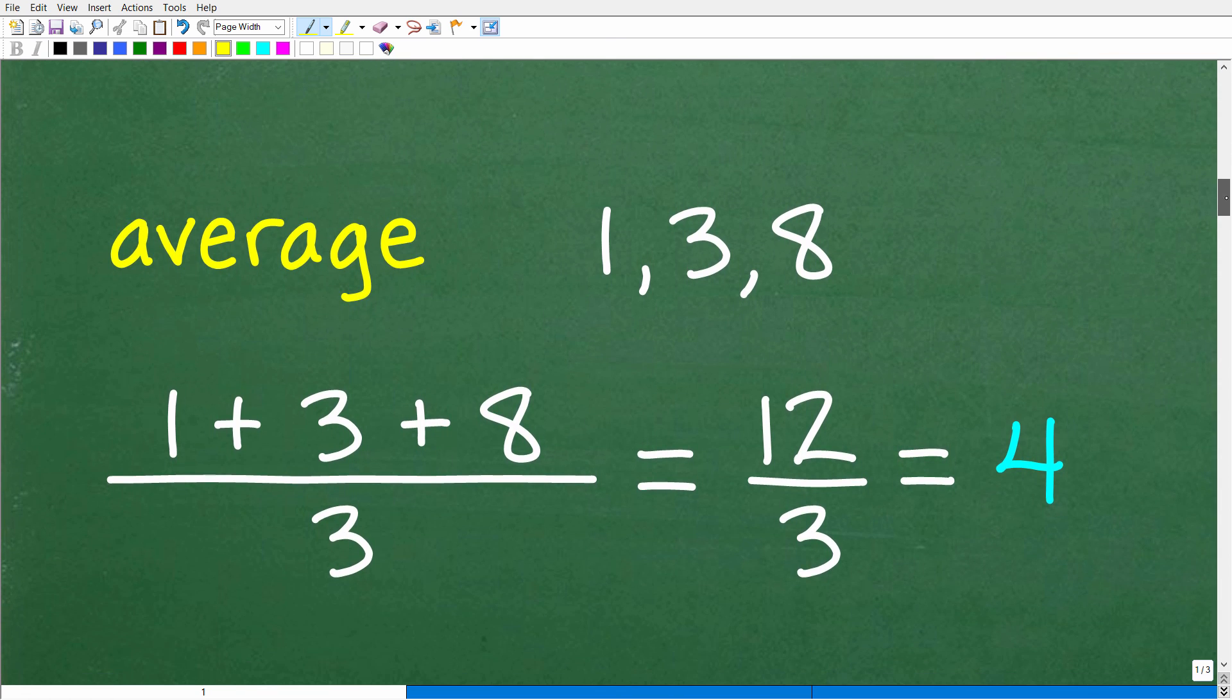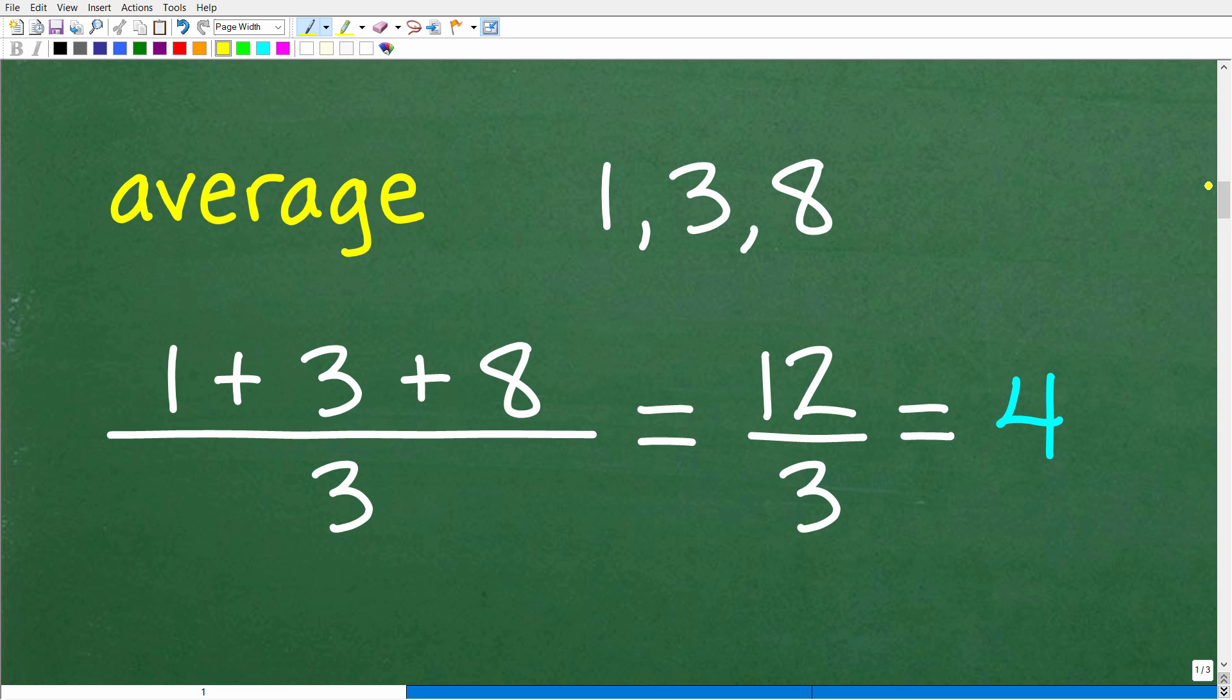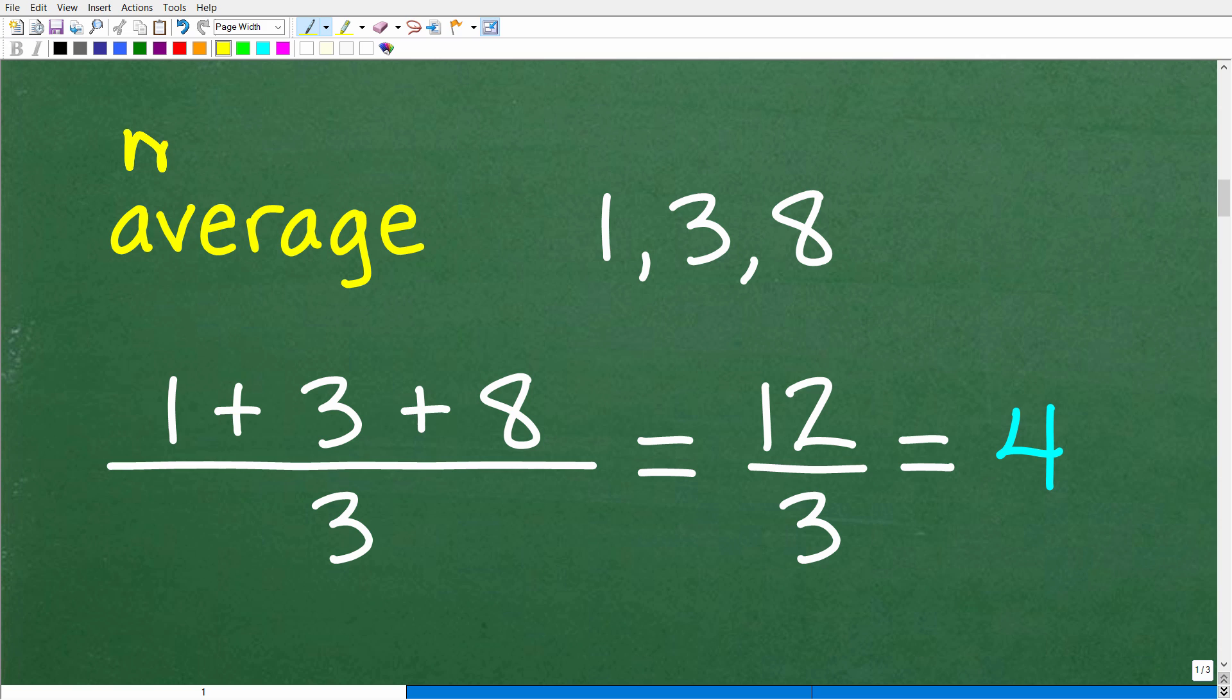Okay, now if you didn't know what the average is, there's another fancy word for the average. It starts with an M. Do you know what it is? Is it median? No, it's not. It is the mean. A lot of people confuse this other word median with the average because the median is also a very commonly used word. But when we're talking about the average, it's also referred to as the mean. So let's go ahead and just calculate the average of these three numbers right here: 1, 3, and 8.